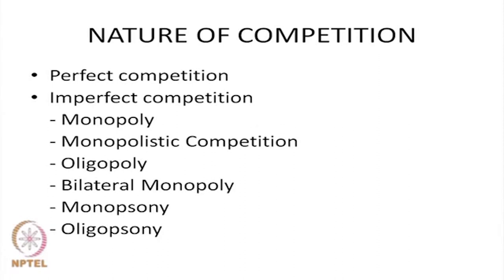Let us find out the different ways in which competition can take place in a market. A market can have perfect competition. In the next slide we will give various characteristics of perfect and imperfect competition. Imperfect competition could be monopoly, monopolistic competition, oligopoly, bilateral monopoly, monopsony and oligopsony. We will discuss the various characteristics of these different types of competition.